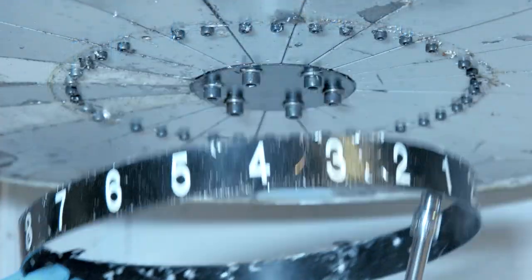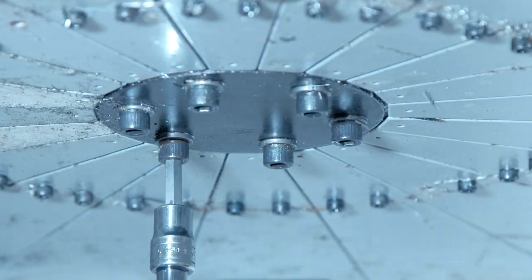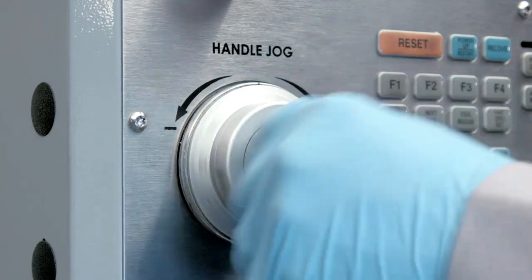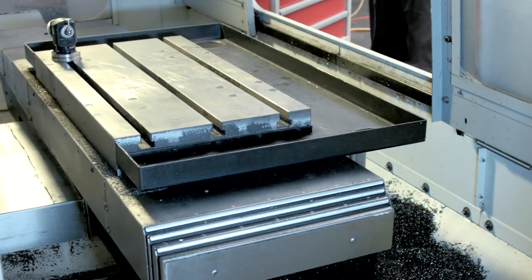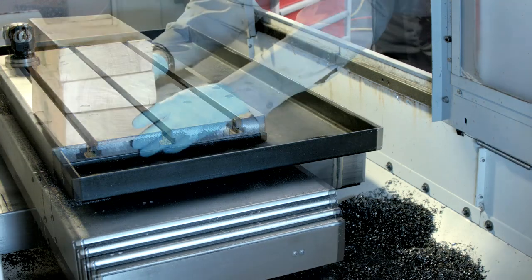We are ready to remove the carousel plate so crack the bolts loose but don't remove them. Jog the table in the X axis direction all the way to the left and the Y axis towards the back to position the jack in the center of the carousel plate.